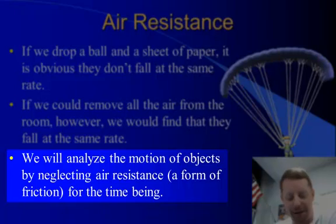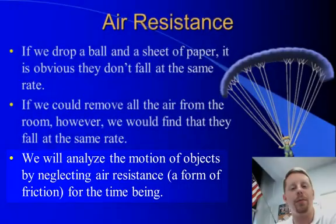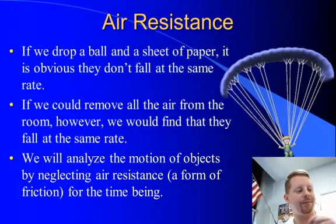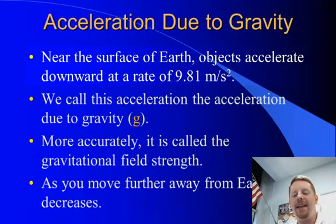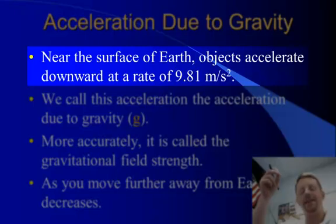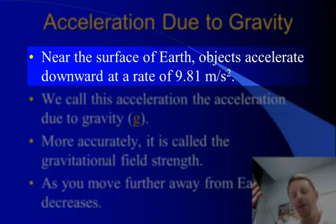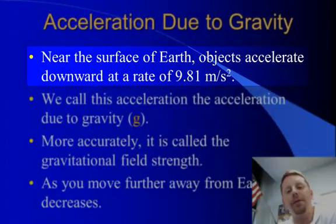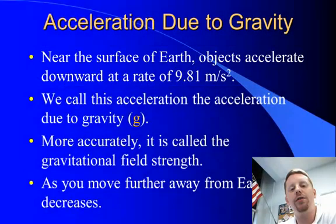We will analyze objects neglecting air resistance, which is really a form of friction. Near the surface of the Earth, objects in free fall accelerate downward at a rate of 9.81 meters per second squared toward the center of the Earth.